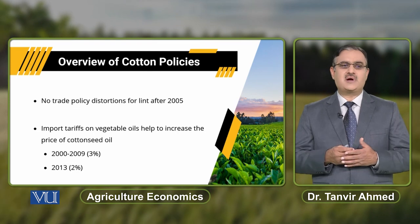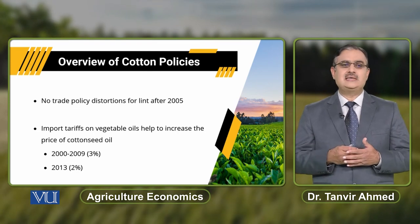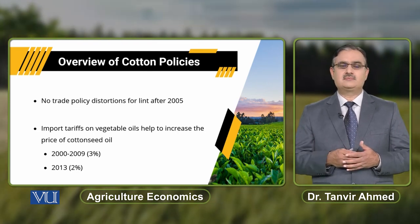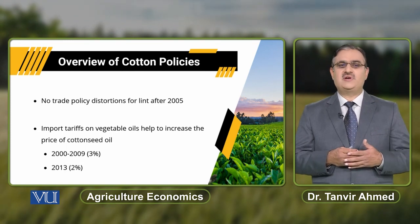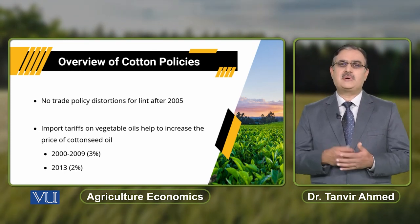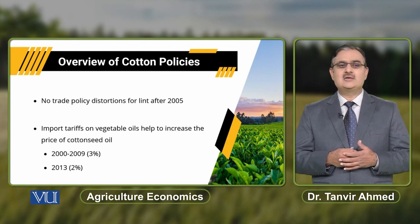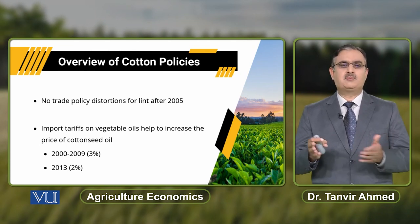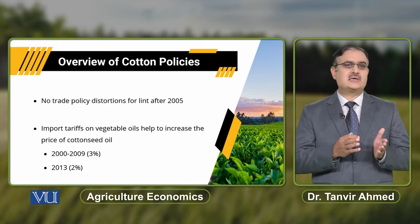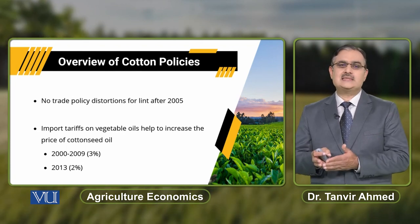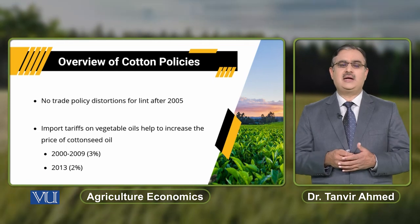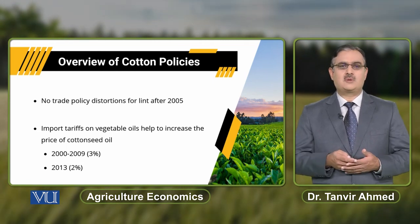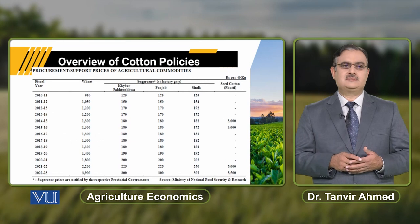After 2005, there are no trade policy distortions for lint. But because of the import tariff on vegetable oils, it helps increase the price of cotton seed oil. That import tariff for the period 2000 to 2009 was about 3%, and in 2013 it was approximately 2%.